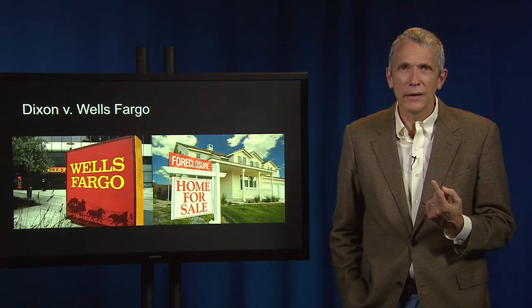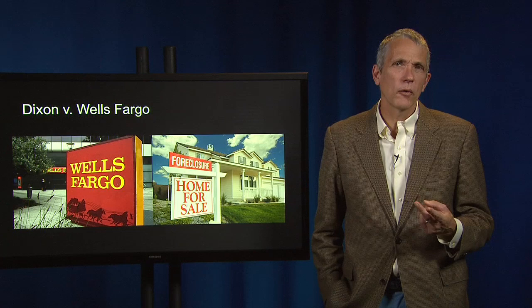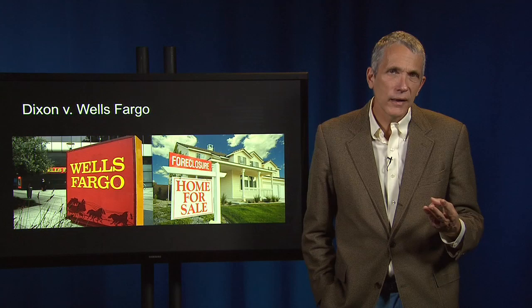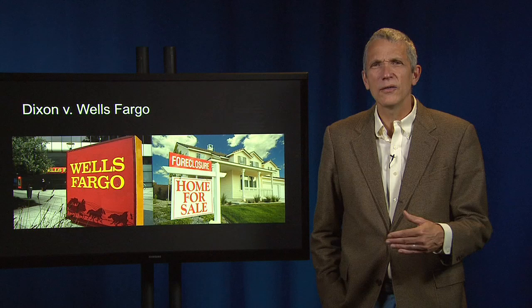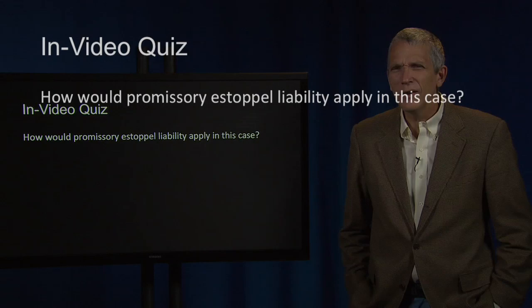The plaintiffs initiated suit in state court seeking: number one, an injunction prohibiting defendant from foreclosing on their home; number two, specific performance of an oral agreement to enter into loan modifications; and number three, seeking damages. The defendant, Wells Fargo, removed the case to federal court and then moved to dismiss.